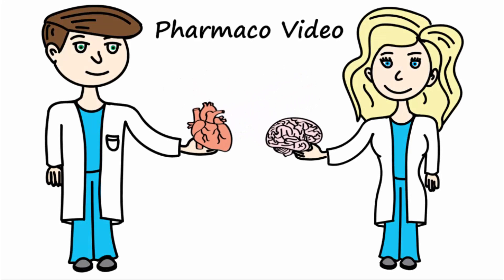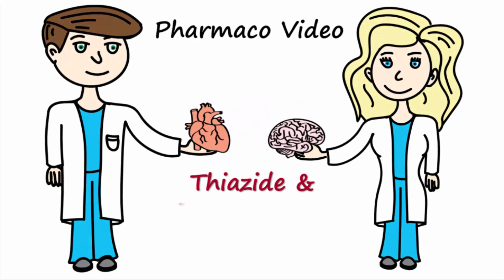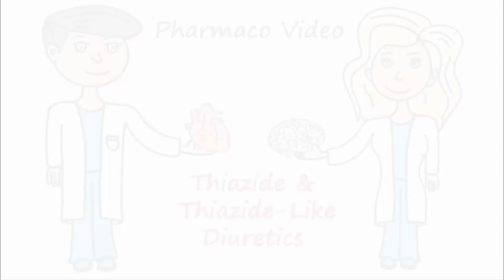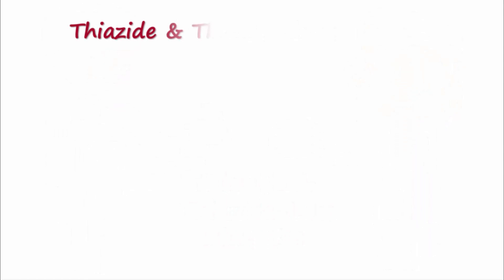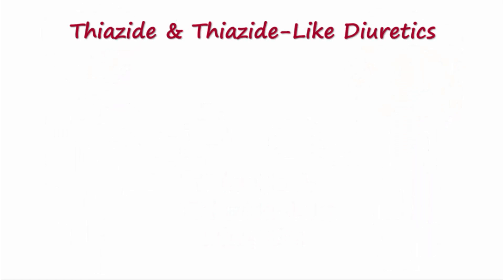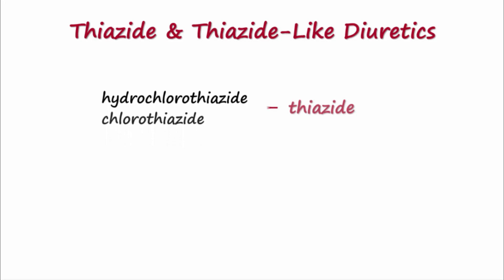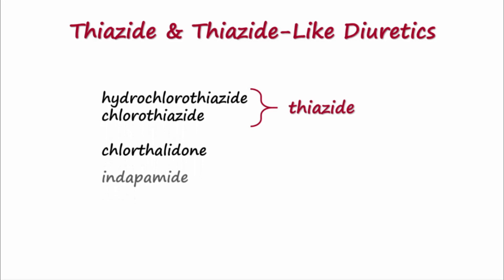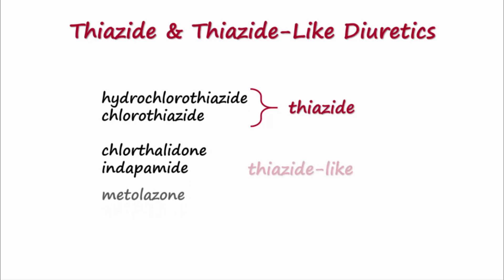Today we explain why thiazide diuretics are useful for so many disease states. Common thiazide and thiazide-like diuretics include hydrochlorothiazide, chlorothiazide, chlorthalidone, indapamide, and metolazone.